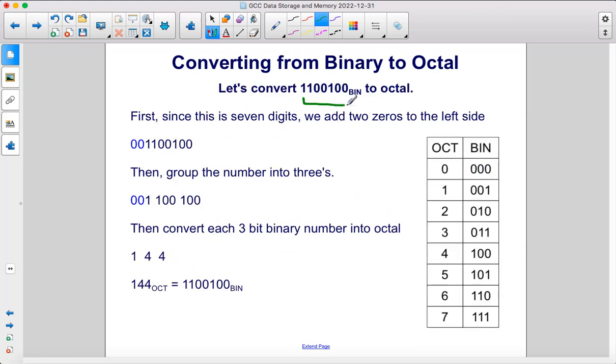Let's convert this number in binary to octal. First, since this is 7 digits, we want there to be 9. We want something divisible by 3, so we're going to add two zeros to the left side. Then we're going to group the number into threes. Then we convert each of those into octal. 001 is 1 in octal, 100 is 4 in octal. Therefore, this number in binary is equal to 144 in octal.